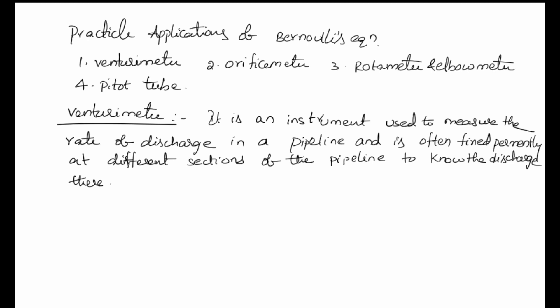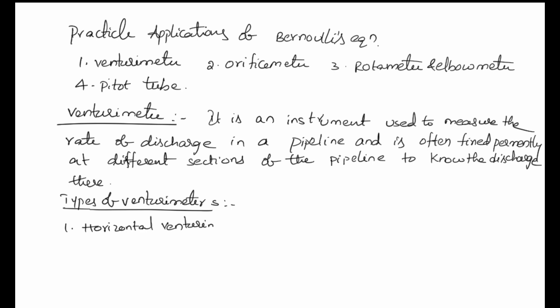There are different types of venturi meters. The first type is the horizontal venturi meter, the second is the vertical venturi meter, and the third is the inclined venturi meter. We will see one by one in later classes what the difference is between these three types and whether there is any difference in calculating the rate of discharge using them.